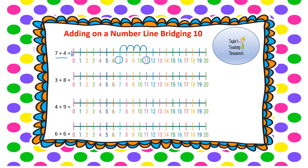Next question: 3 add 8. We start at 3 and jump on 8 spaces: 1, 2, 3, 4, 5, 6, 7, 8. Next question: 4 add 9. Start with number 4, jump on 9 spaces: 1, 2, 3, 4, 5, 6, 7, 8, 9.